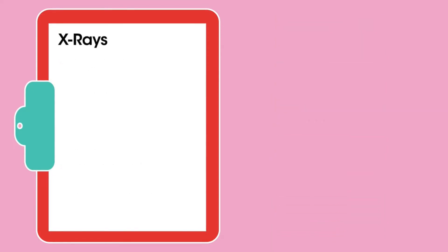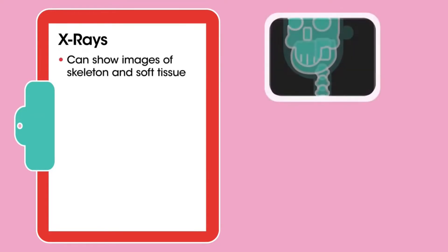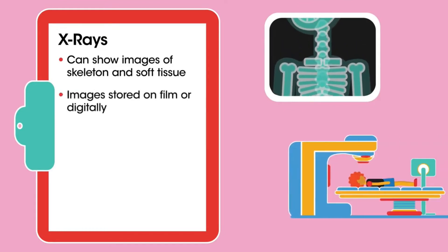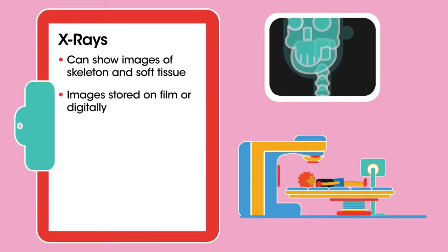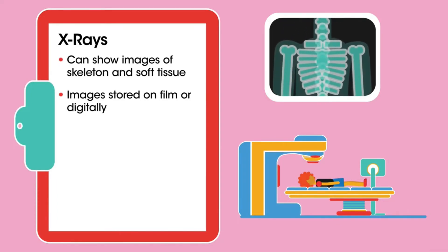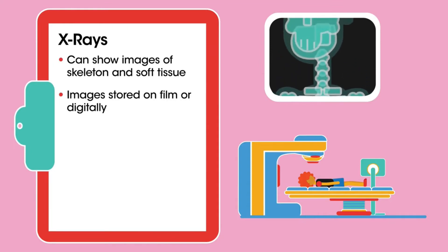X-rays. These are good at penetrating the body. Skeletal structures absorb most X-rays and softer tissue much less. Images are captured by exposing photographic film, which is a little old fashioned, or as a digital image via charge coupled devices or CCD detectors.